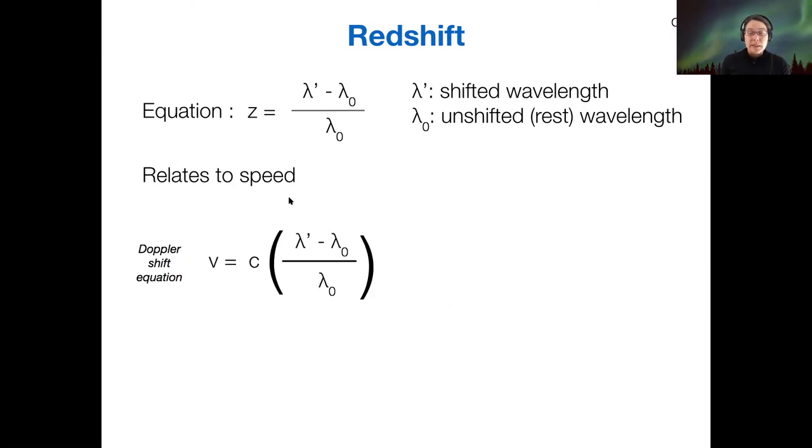All right. So we can use the redshift, like I said, to find the speed of some object, and that's what we did way back when we talked about Doppler shift. So this again is the Doppler shift equation, and this entire piece here inside the parentheses is just our redshift, right? So Doppler shift equation v is equal to the speed of light times the redshift. In the case of a Doppler shift, this doesn't have to be a redshift, right? It could be a blueshift.